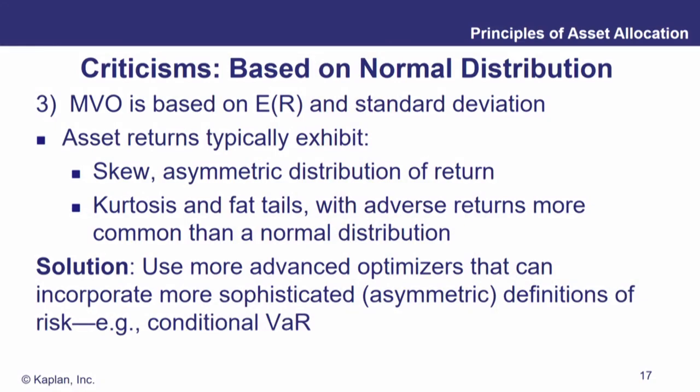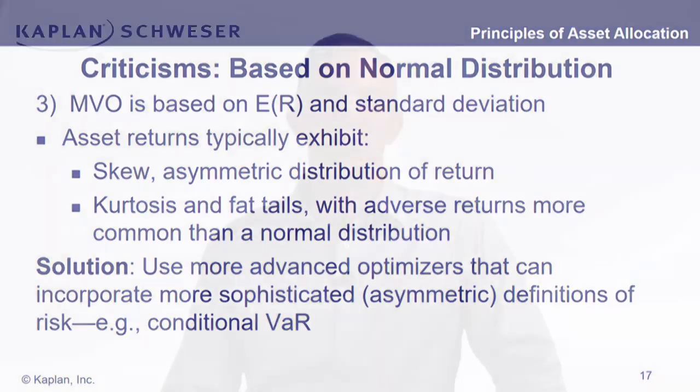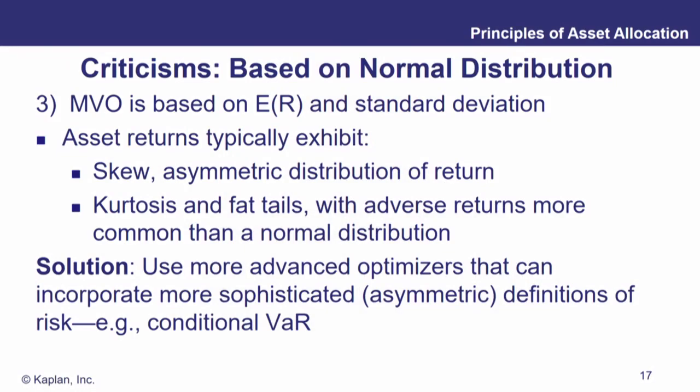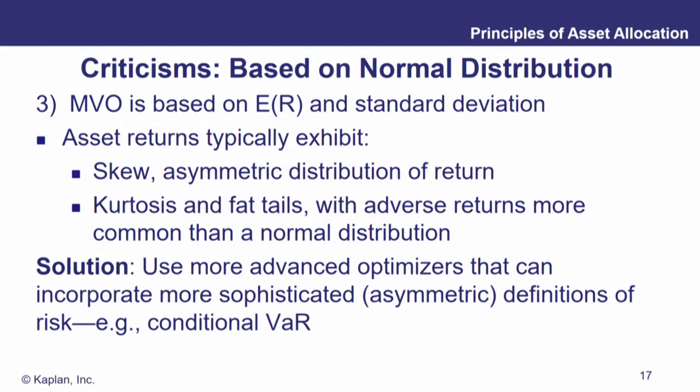There are some other criticisms of mean variance optimization. Whenever we use only those two moments of the probability distribution, there's a good chance we're assuming a normal distribution. We know that's an oversimplification. Asset returns tend to exhibit some degree of skew — either positive or negative — meaning there's an asymmetric distribution of returns rather than a perfect bell curve. We're also underestimating kurtosis, which is the thickness of the tails at either extreme of the distribution. Asset returns tend to have a higher degree of kurtosis than predicted under the normal distribution — they have fatter tails.